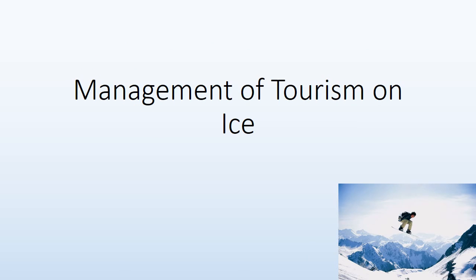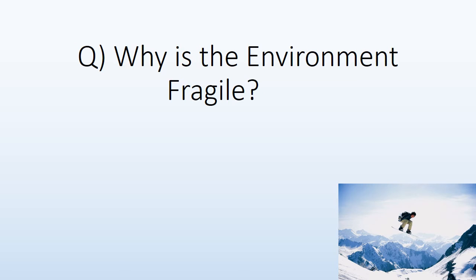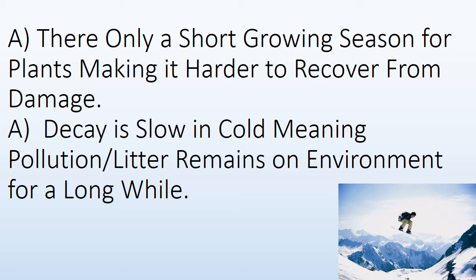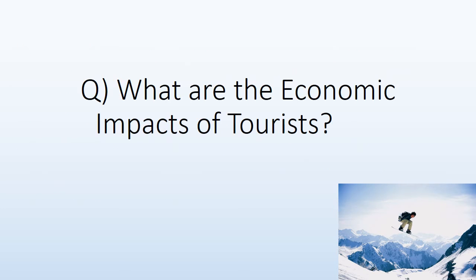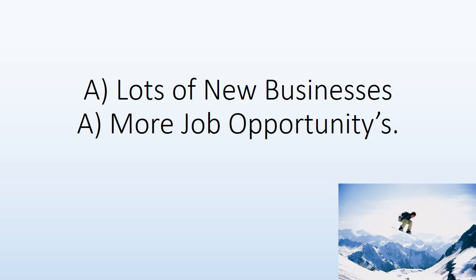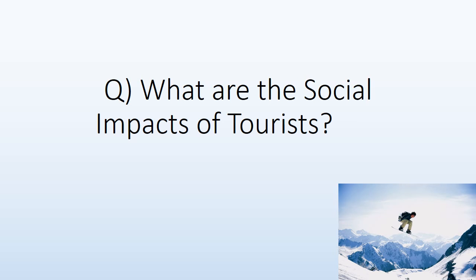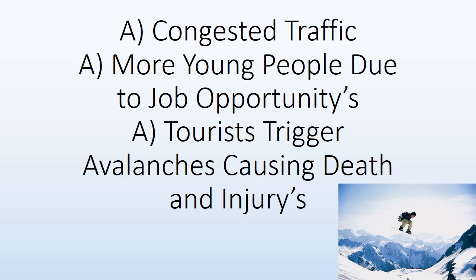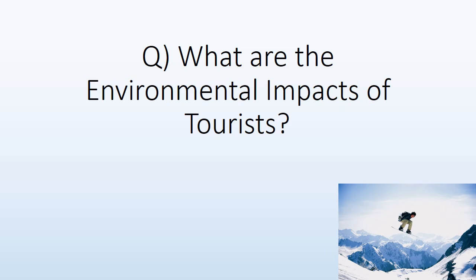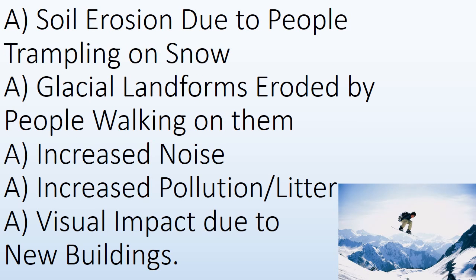Management of tourism on ice. The environment is fragile because there is only a short growing season for plants, making it harder to recover from damage, and decay is slow in the cold, meaning pollution and litter remain for a long time. Economic impacts include lots of new businesses and more job opportunities. Social impacts include congested traffic, more young people due to job opportunities, and tourists triggering avalanches causing death and injuries. Environmental impacts include soil erosion from trampling, glacial landforms being eroded, increased noise, increased pollution and litter, and visual impact from new buildings.